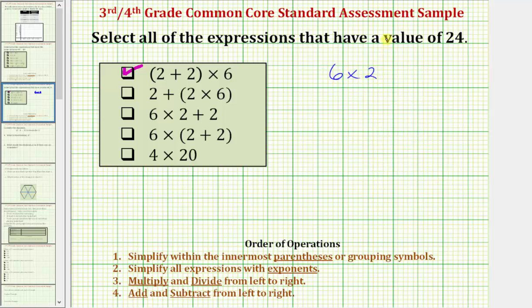For our next expression, notice how we do not have parenthesis. So looking back at the order of operations, we don't have any exponents. So notice how for step three, we multiply and divide from left to right before we add and subtract from left to right.